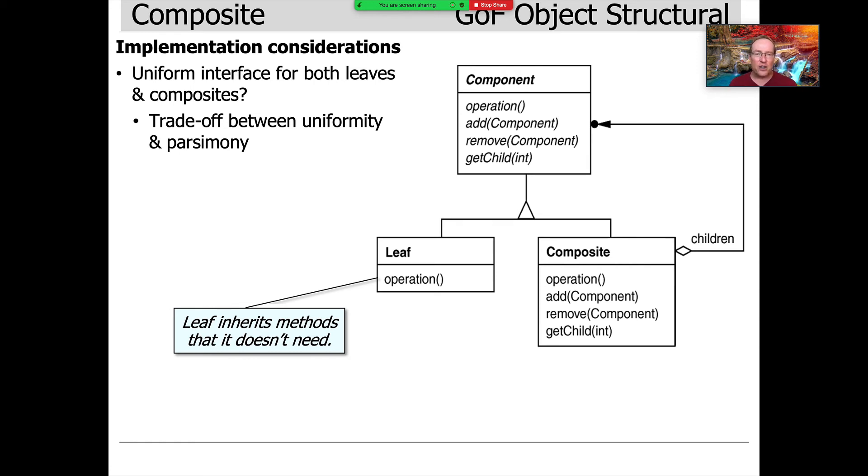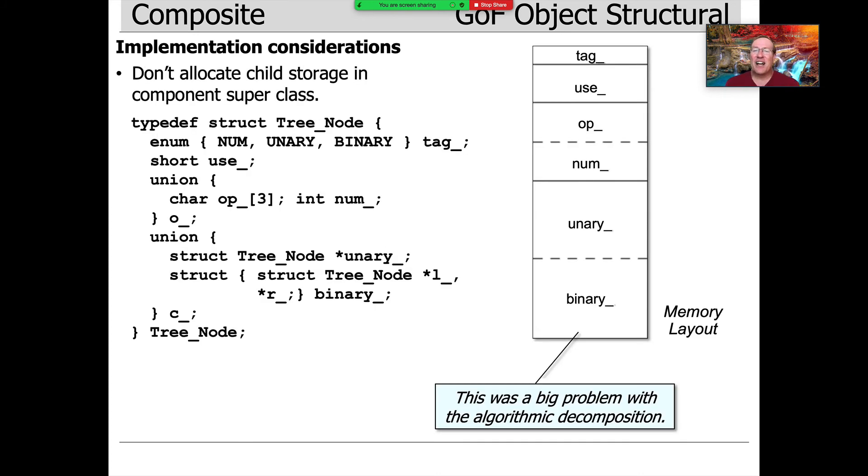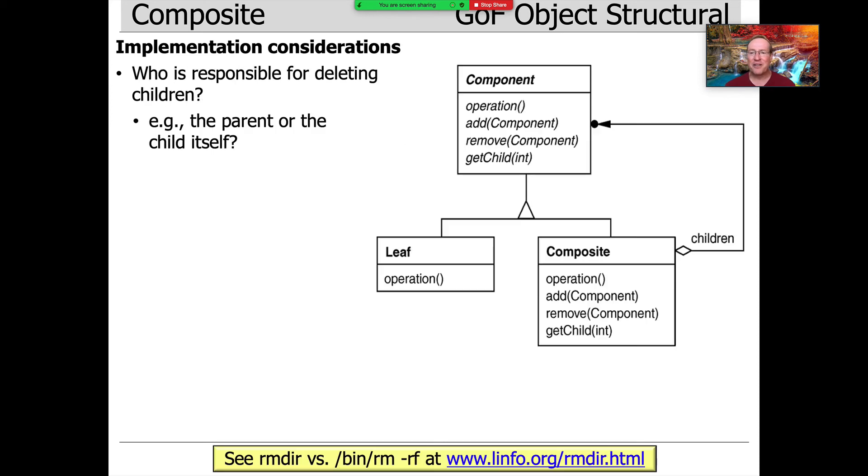By the way, I always thought it was funny that the word parsimony means concise or pithy, but it's a big word, right? So it's like, why didn't they just choose a short word to mean pithy, like pithy? Another consideration here is, don't allocate storage for your children in the superclass or in the base class. And that's, as we'll see later, that's going to be a big problem with the algorithmic decomposition that we alluded to earlier, where every object contains all the state for every different kind of node.